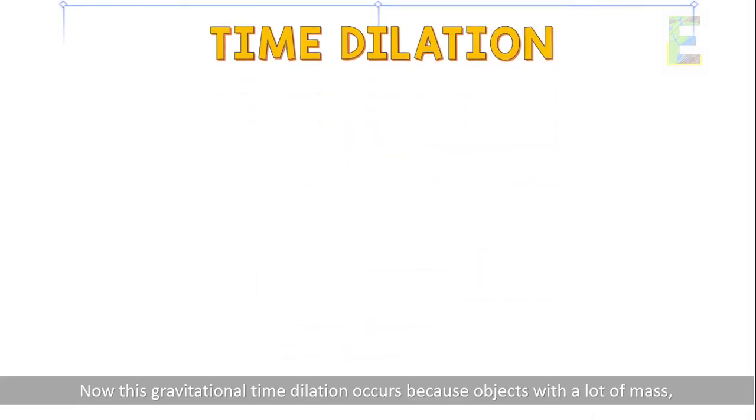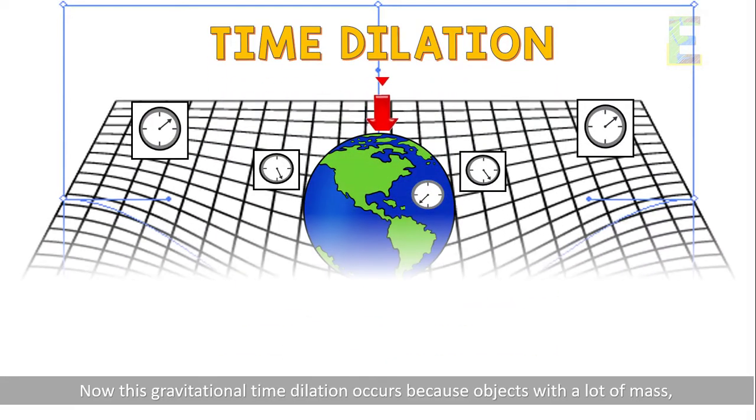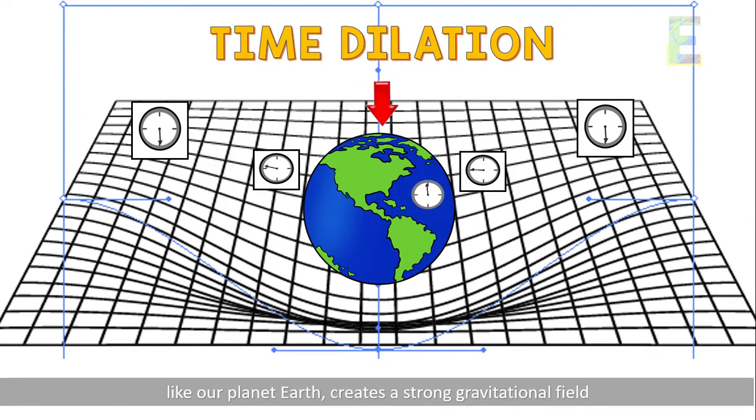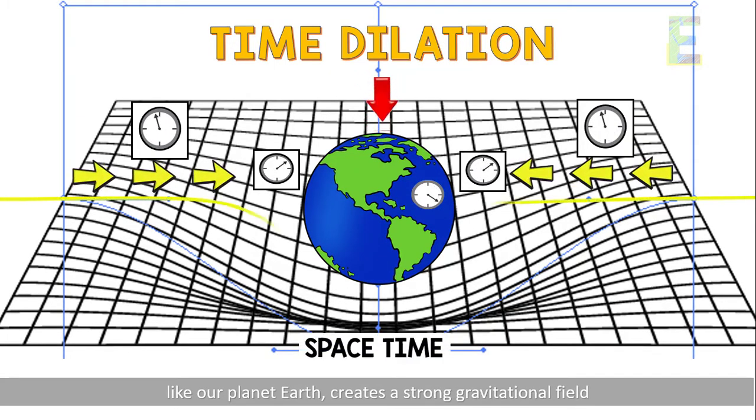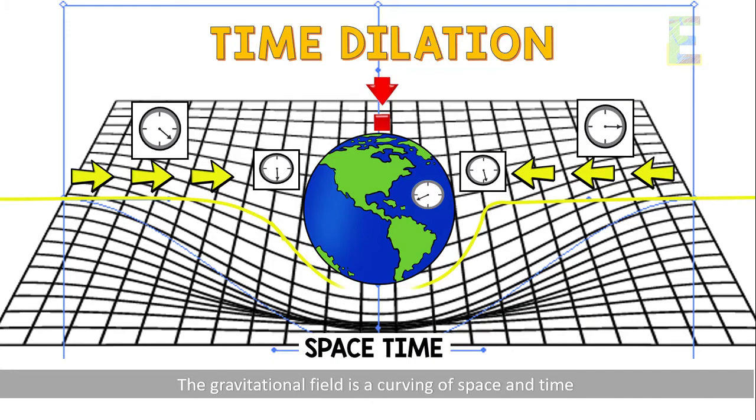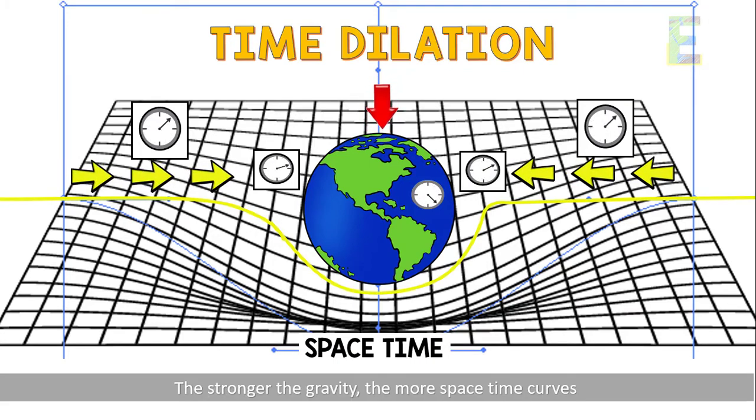Now, this gravitational time dilation occurs because objects with a lot of mass, like our planet Earth, create a strong gravitational field. The gravitational field is a curving of space and time. The stronger the gravity, the more space-time curves.